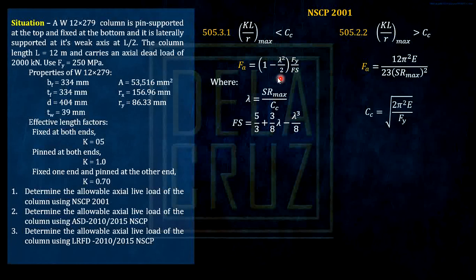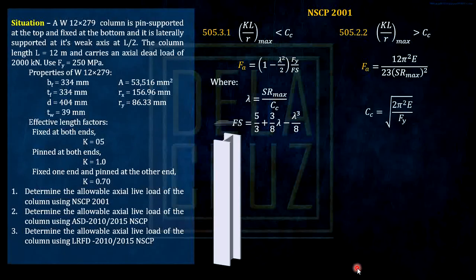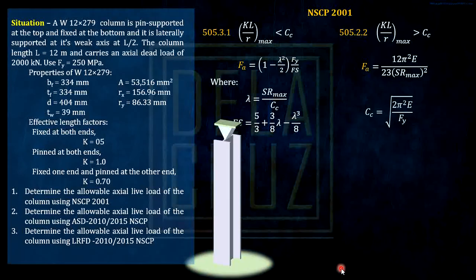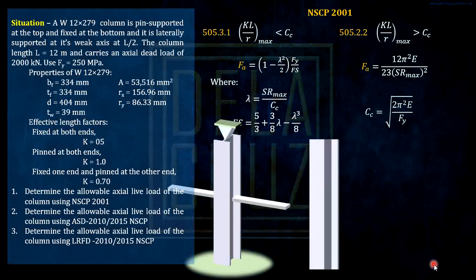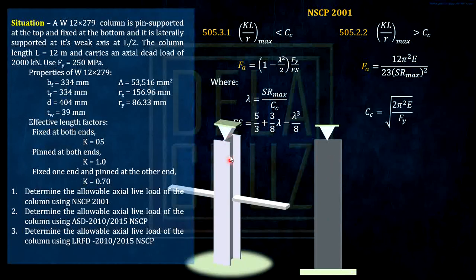First step: calculate the slenderness ratio, maximum slenderness ratio. The column is pin-supported at the top and fixed at the bottom. In this problem, check the slenderness ratio about the X and Y axis. It is laterally supported at half of the length, meaning this is 6 meters and 6 meters. So considering this buckling about the major axis or the strong axis, we are looking at the side view. If we look at the cross section, we will be considering the buckling about this X axis.